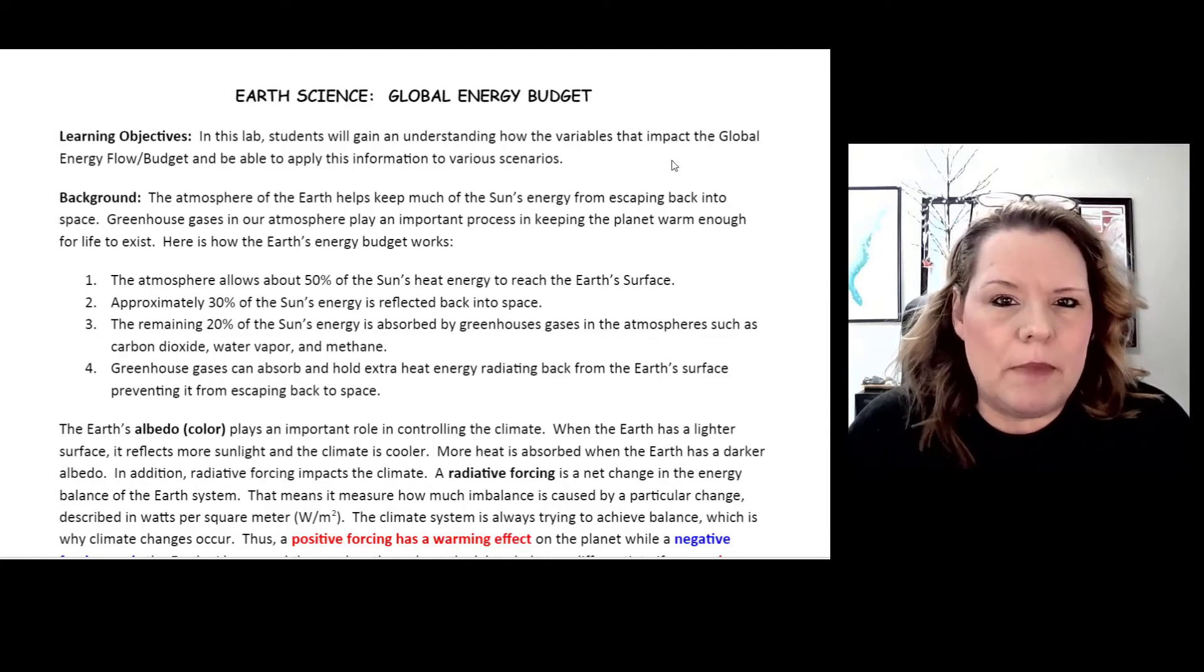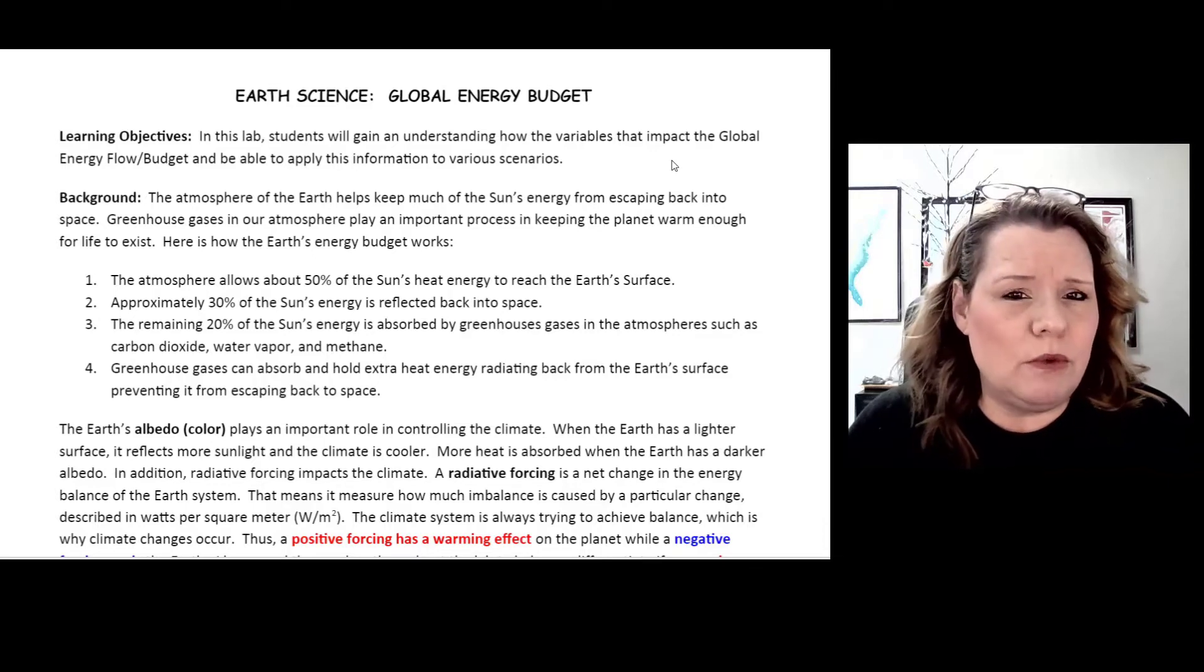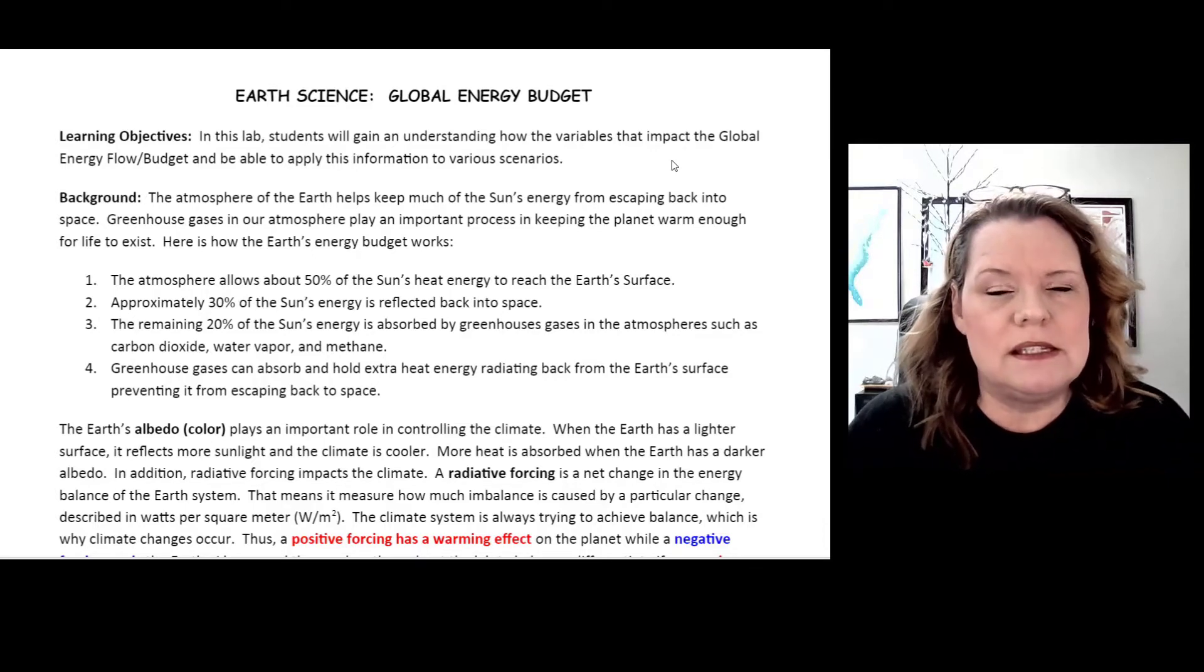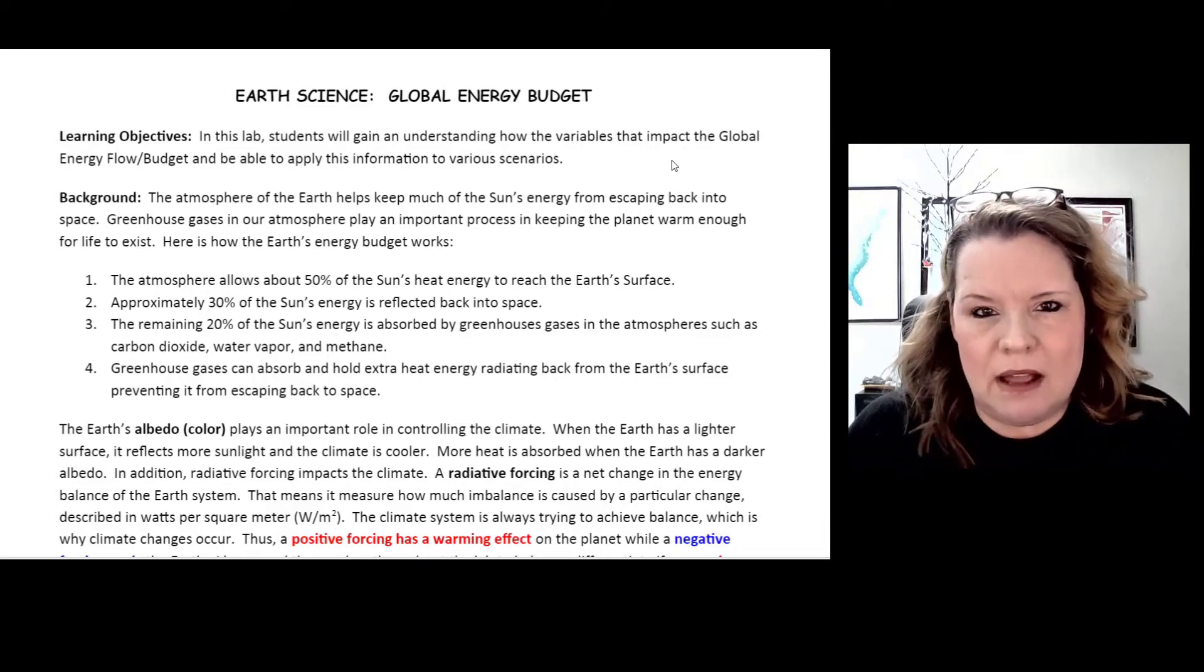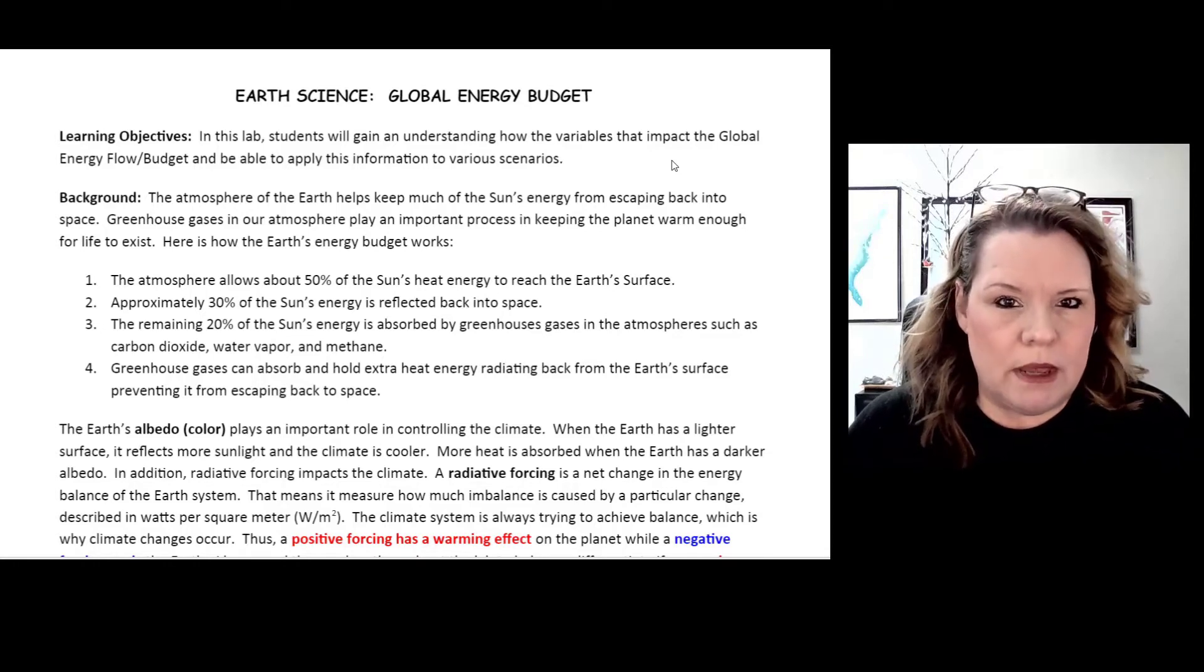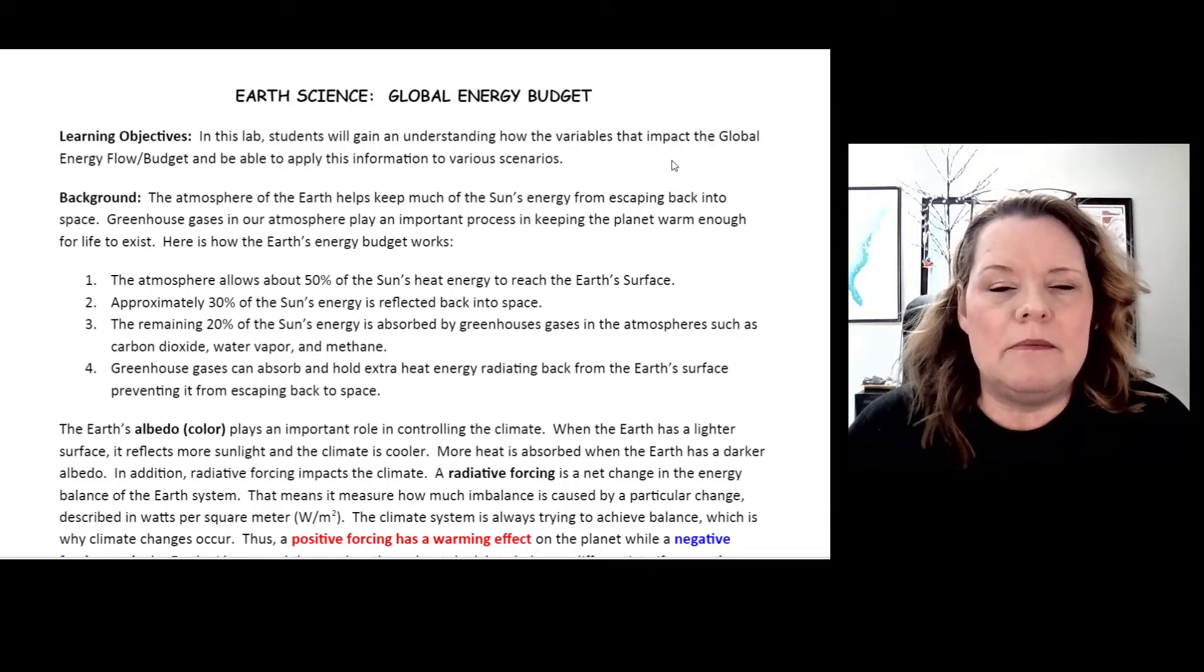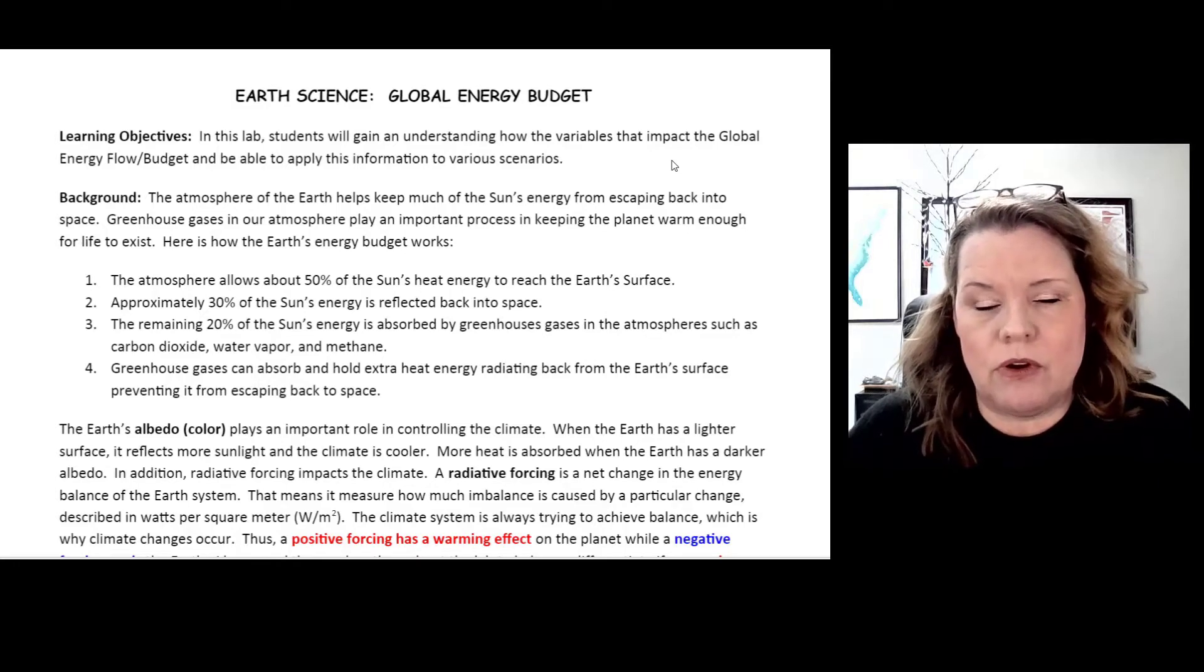When we talk about positive and negative forcings in climate and positive and negative impacts, we're actually referring to temperature changes. When something's in the positive, it means it's in the red - you have a warming occurring. When it's in the negative or the blue, which you'll see in this lab, it means that we have cooling temperatures occur.